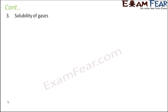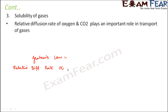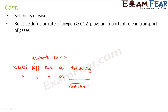The third factor is the solubility of gases. The relative diffusion rate of oxygen and carbon dioxide plays an important role in the transport of gases. As per Graham's law, the relative diffusion rate — how fast diffusion takes place — is directly proportional to solubility, and inversely proportional to the square root of the molecular mass of that particular gas.